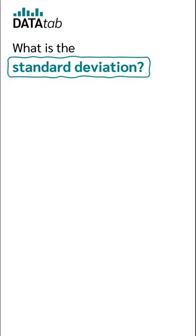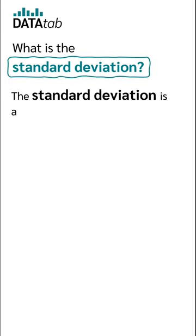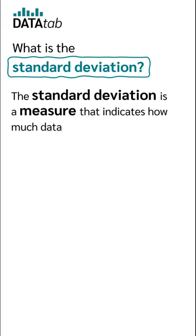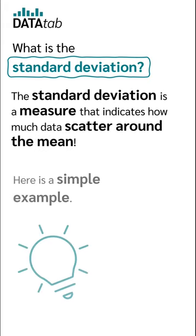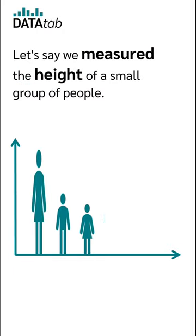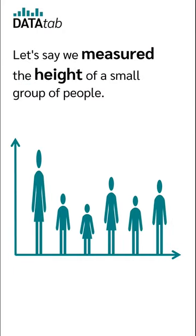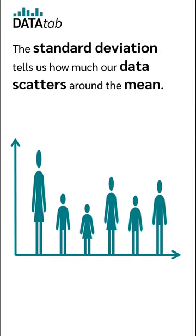What is the standard deviation? The standard deviation is a measure that indicates how much data scatter around the mean. Here is a simple example. Let's say we measure the height of a small group of people. The standard deviation tells us how much our data scatter around the mean.